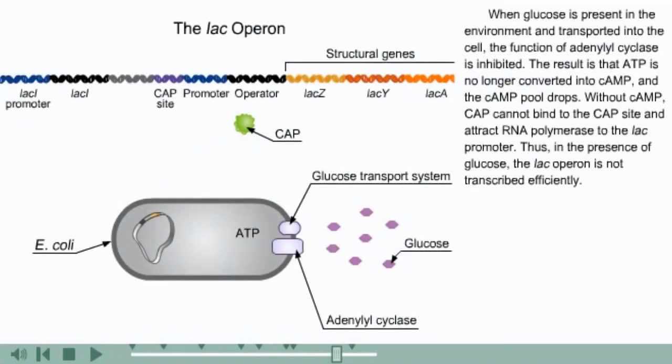When glucose is present in the environment and transported into the cell, the function of adenylyl cyclase is inhibited. The result is that ATP is no longer converted into cyclic AMP, and the cyclic AMP pool drops. Without cyclic AMP, CAP cannot bind to the CAP site and attract RNA polymerase to the lac promoter. Thus, in the presence of glucose, the lac operon is not transcribed efficiently.